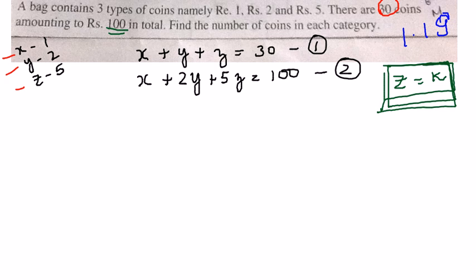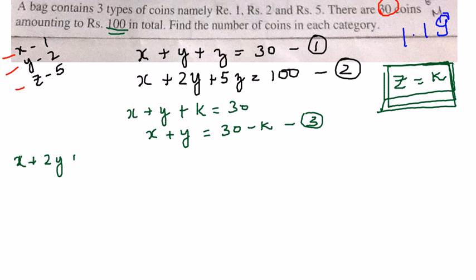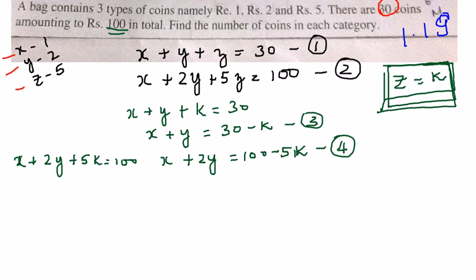With z equal to k, the first equation becomes x plus y plus k equals 30, so x plus y equals 30 minus k — this is equation 3. The second equation becomes x plus 2y plus 5k equals 100, so x plus 2y equals 100 minus 5k — this is equation 4.